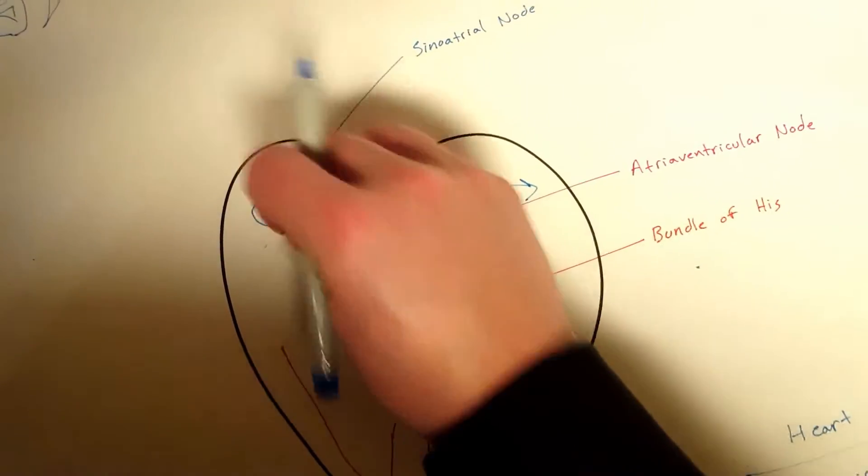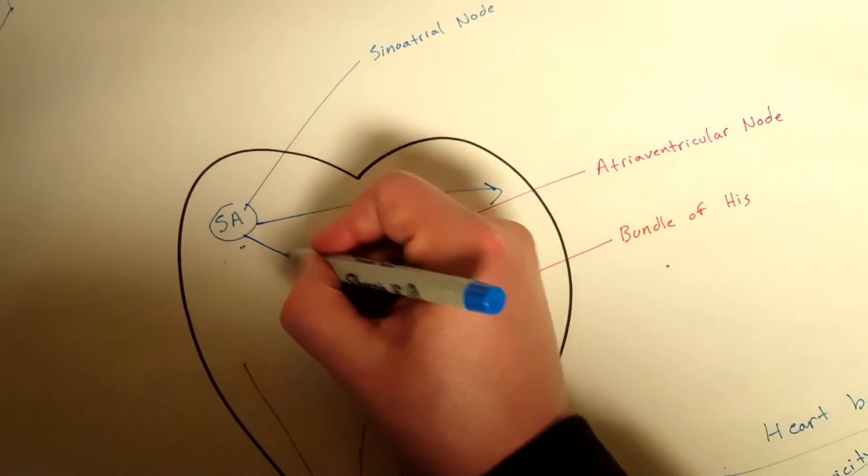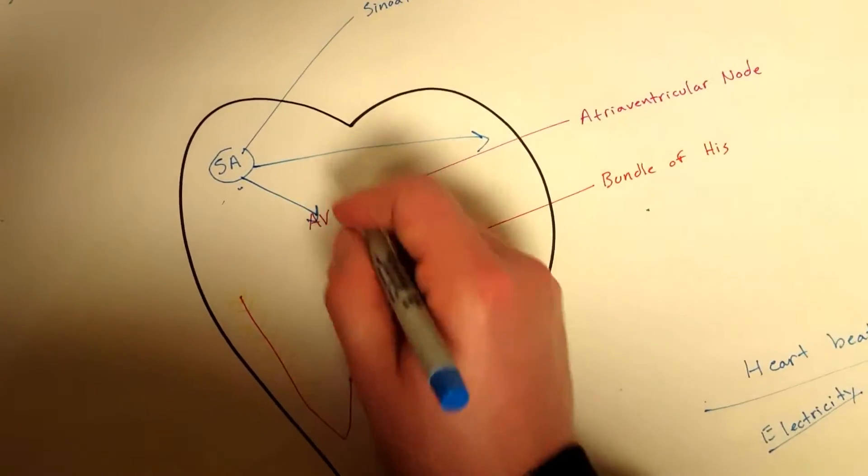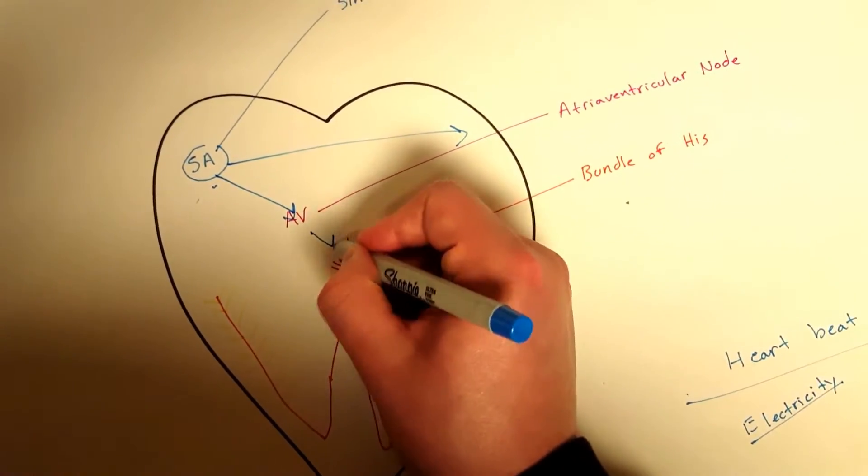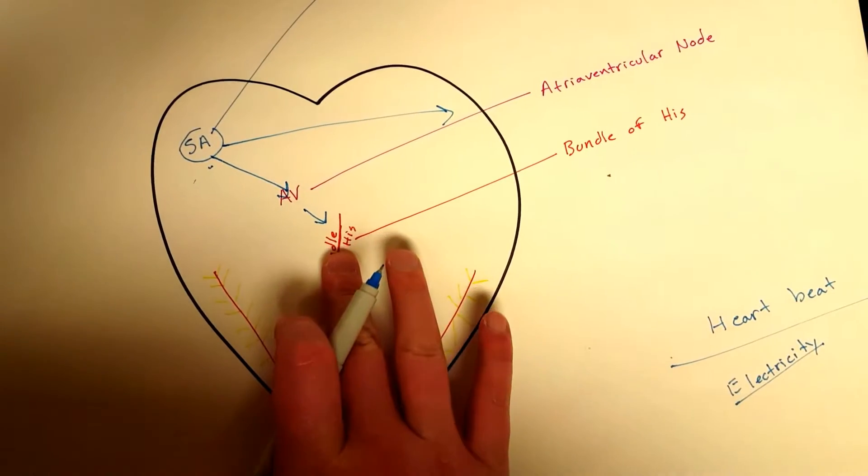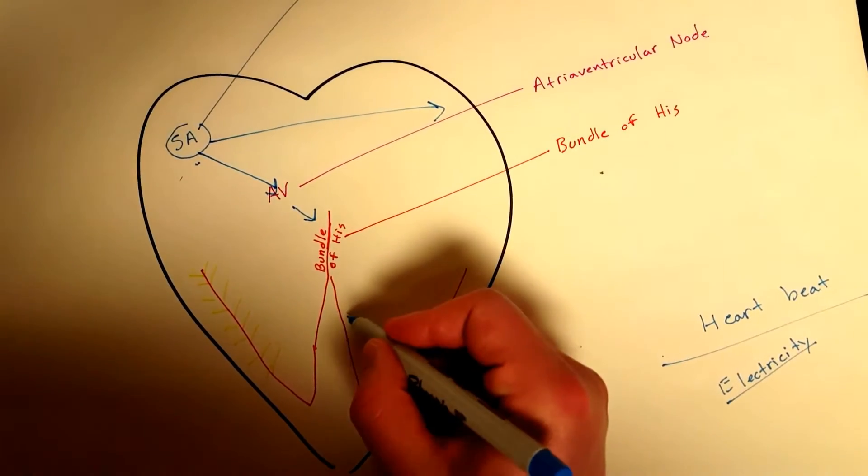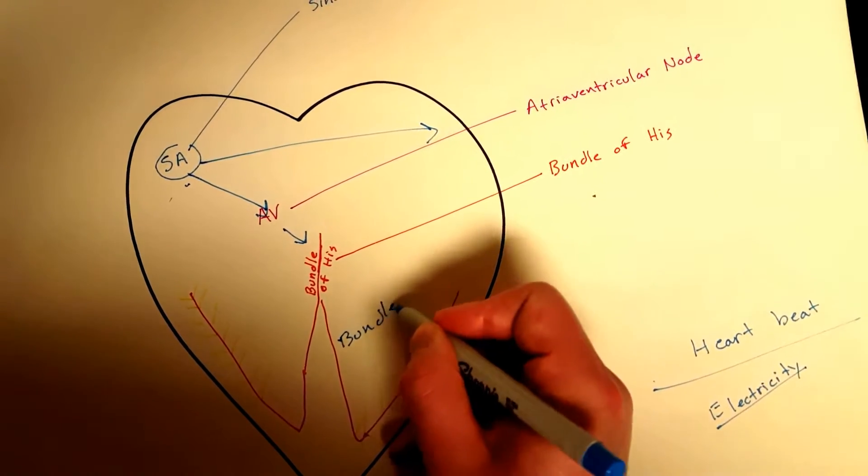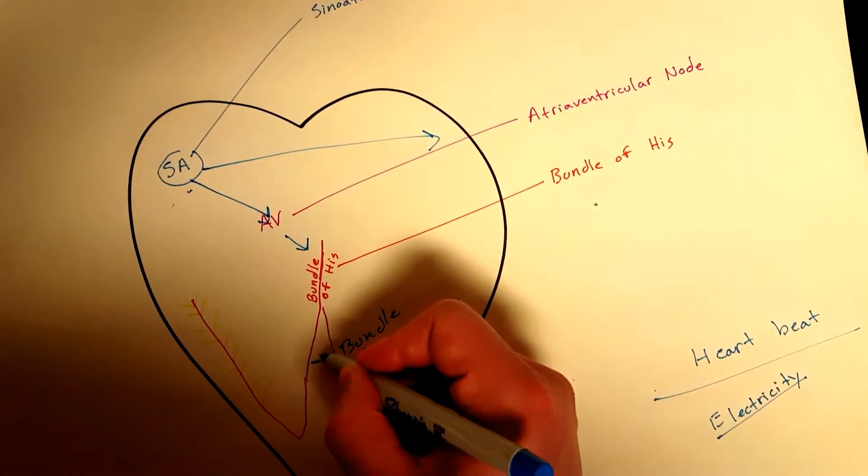Then the impulse is sent down to your AV node, the atrioventricular node, and it just keeps going down into your bundle of His. The message is sent down here. These are called your bundle branches. I'll put a B for branches, both of these.